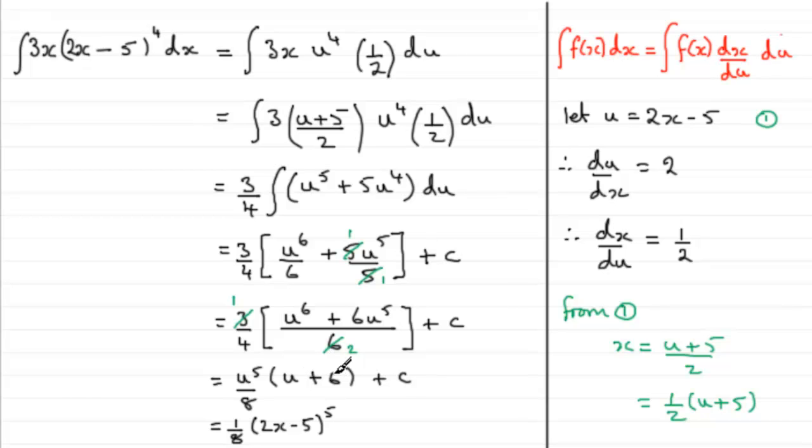So in other words, we've got 2x minus 5 plus another 6, which is going to be 2x plus 1. So I can just write 2x plus 1 in here. And then plus c. So there's the answer.